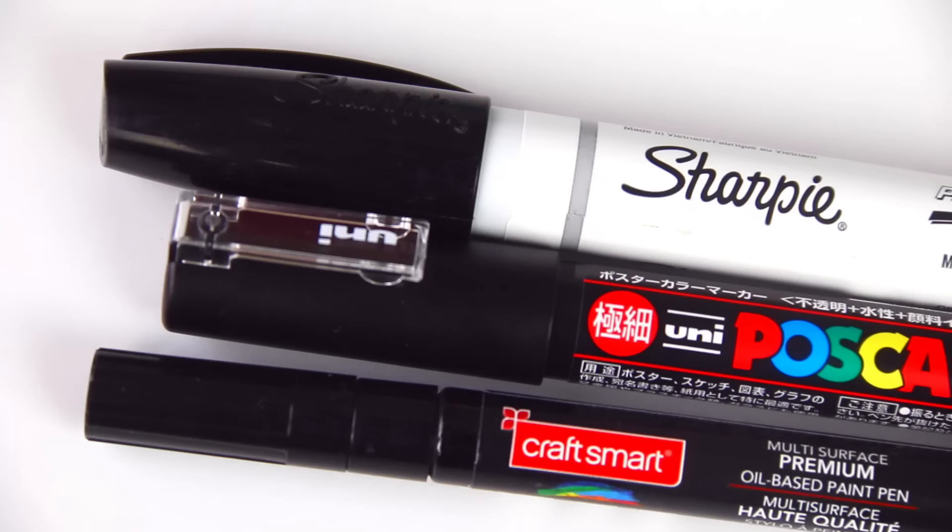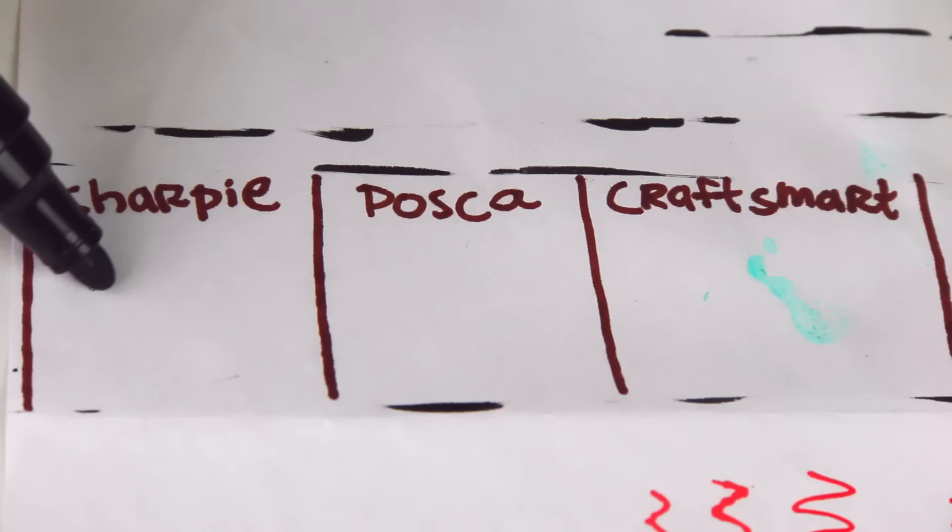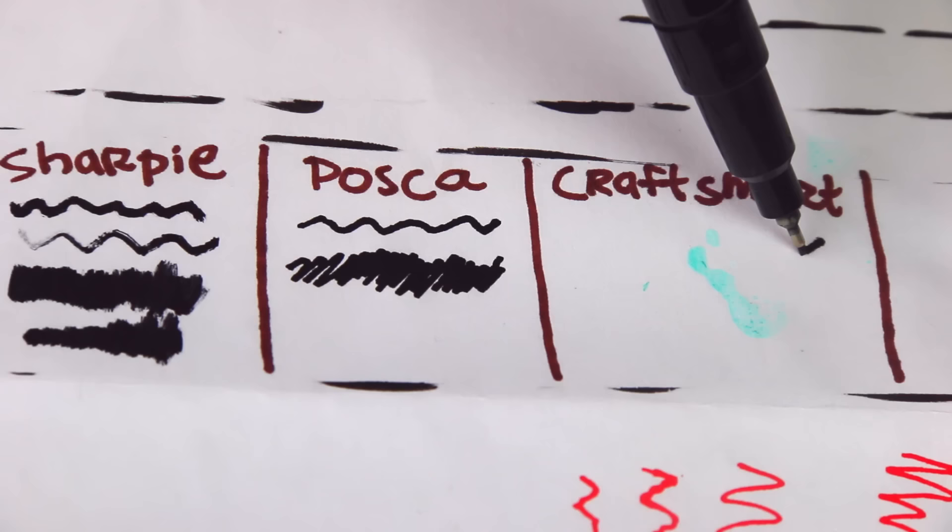Here I'm going to be comparing the Posca paint pen to a Sharpie paint pen and a Craftsmart one. I do want to point out that Posca is a water-based paint pen, while the other two are oil-based, but I still want to do this comparison. My Sharpie is kind of low on juice, but I think this is a fair representation of how it works. Also, Sharpies smell, but Craftsmart smells even worse.